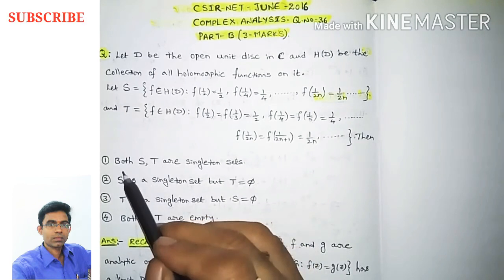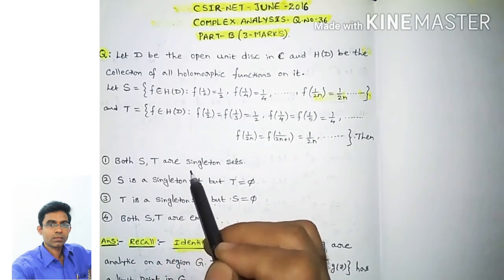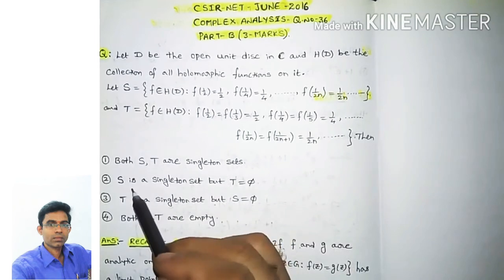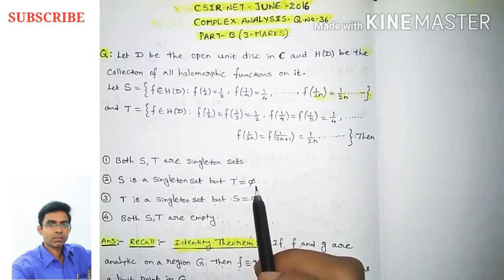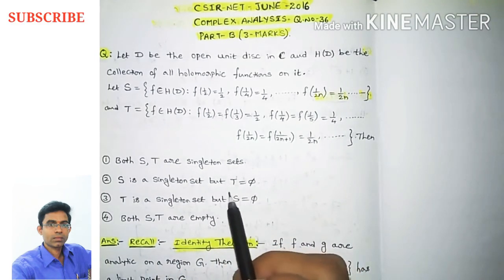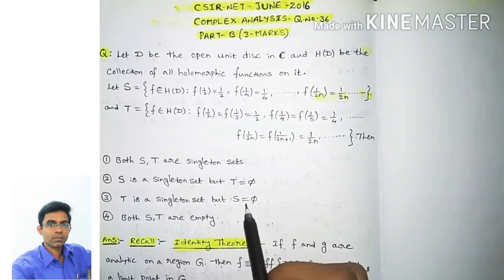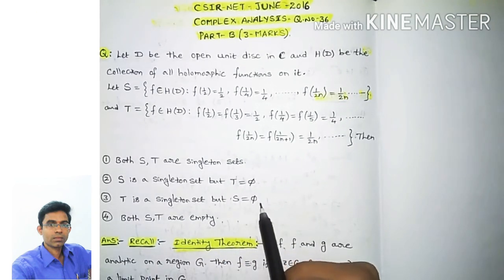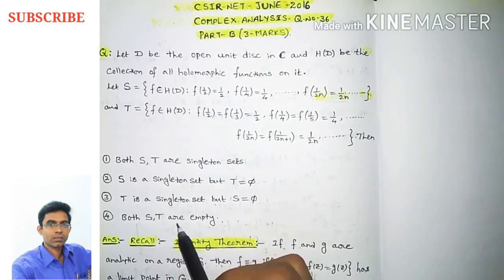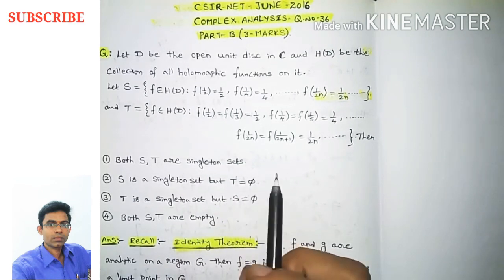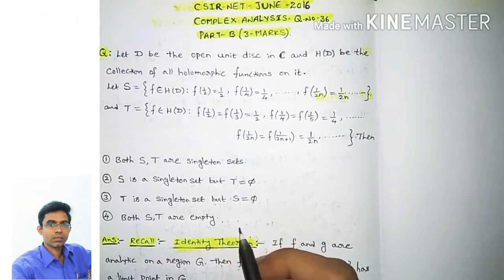We have to choose one correct option from four: option 1, both S and T are singleton sets; option 2, S is a singleton set but T is the empty set; option 3, T is a singleton set but S is empty; option 4, both S and T are empty. This is an application of the identity theorem.